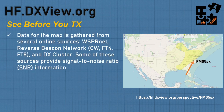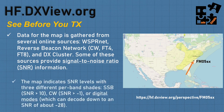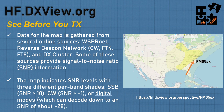What makes this tool powerful is that it pulls from WhisperNet, Reverse Beacon Network, CW, FT4, FT8, and DX Cluster — providing all that data for really accurate, real-time information. The map indicates SNR levels with three different per-band shades: SSB is anything greater than 10 dB, CW greater than minus 1 dB, and digital modes at minus 28 dB and greater.